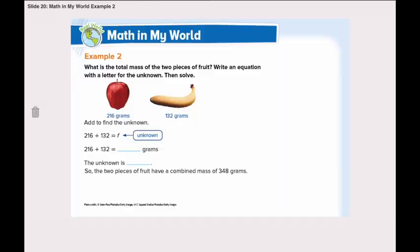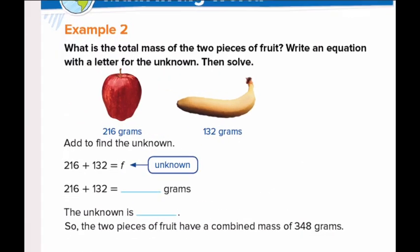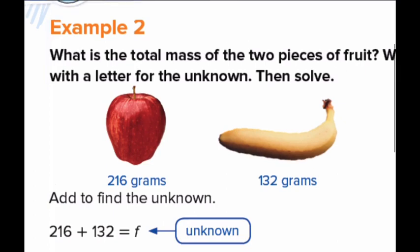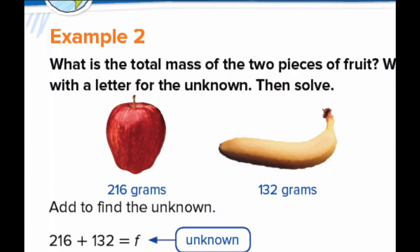Now let's move to example number 2. What is the total mass of the two pieces of fruit? We will write an equation with a letter for the unknown. Then we will solve. Here we have an apple and a banana. An apple weighs 216 grams, and a banana weighs 132 grams. So we will add both together to find the total of the two pieces of fruit.